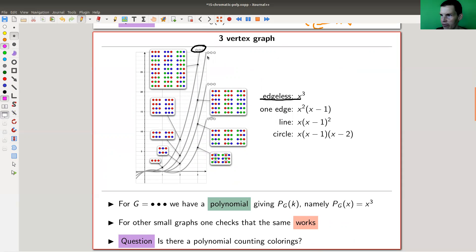This is this one here. And then there's a one edge graph, which is this one here. And then there's a line graph, which is this one here. And then there's a circle graph, which is this one here. It's just illustrated like this, but it's really just a circle.